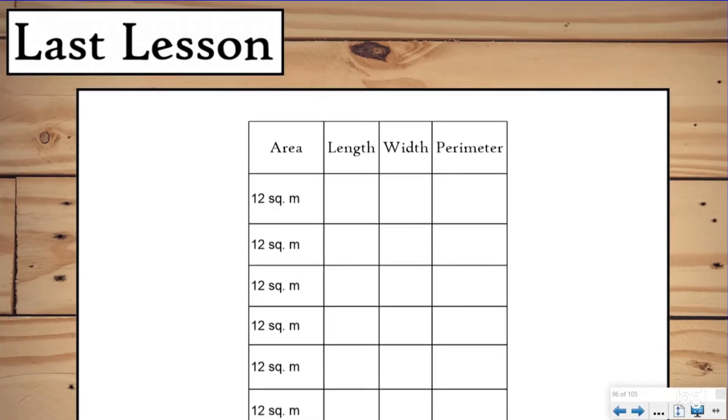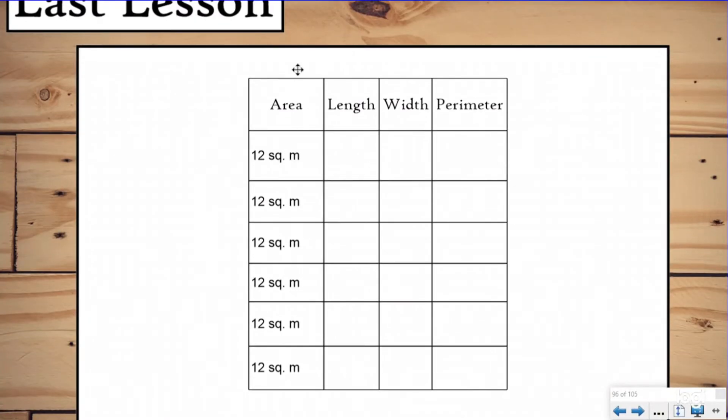Last lesson, we did a chart like this. We were given the area, had to come up with our factors and use those as the dimensions for a rectangle. Because when we're thinking about rectangles and area, we're making an array, which is just a strategy to solve repeated addition multiplication equations.